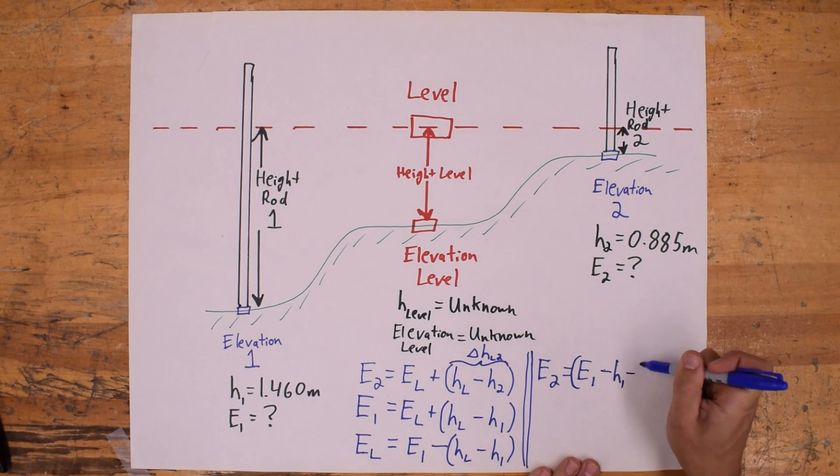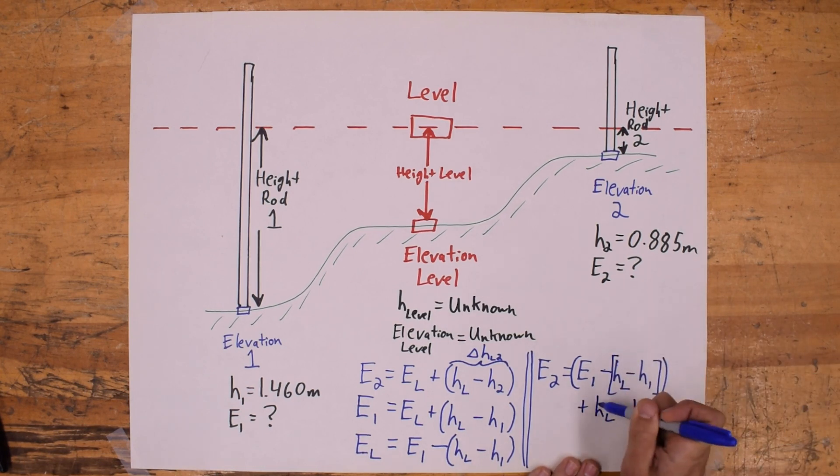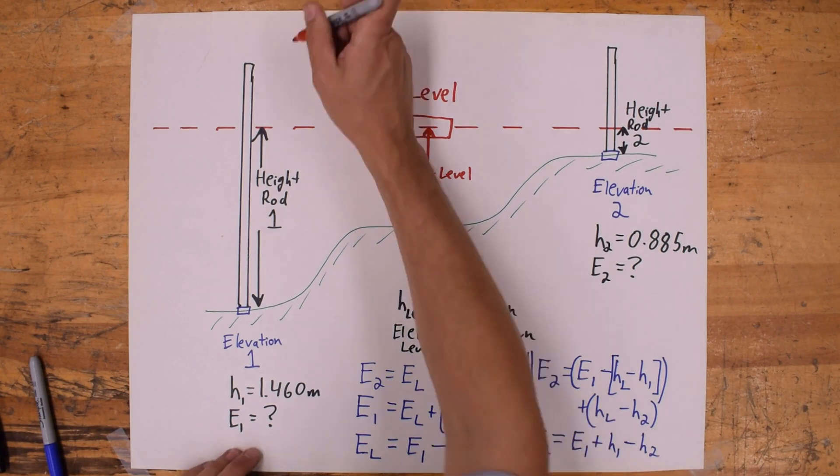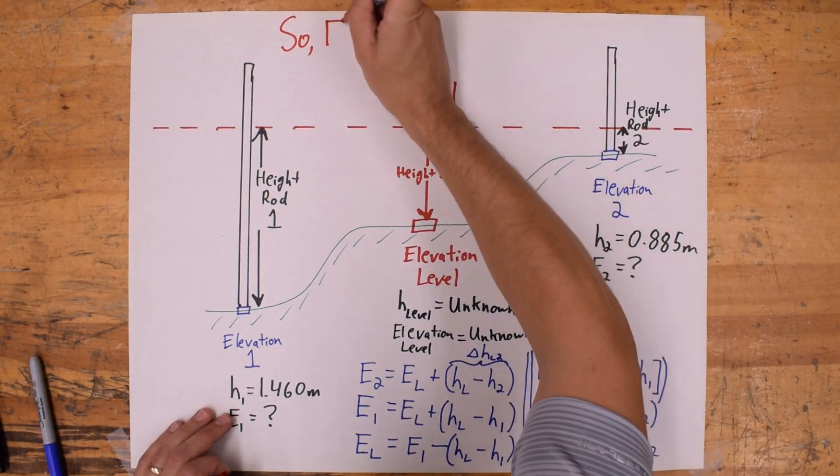So putting this rearranged equation into that first one for elevation 2, we can cancel out the height of the level. And we are left with the elevation at 2 is equal to the elevation at 1 plus the height reading at 1 minus the height reading at 2.